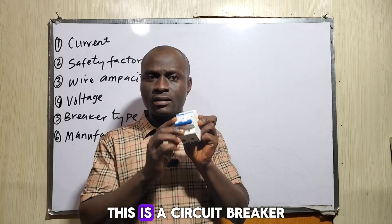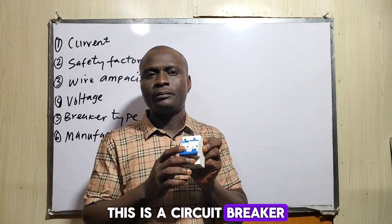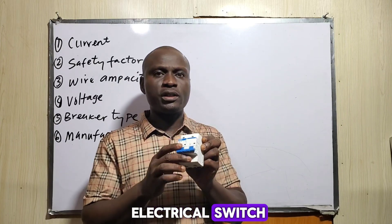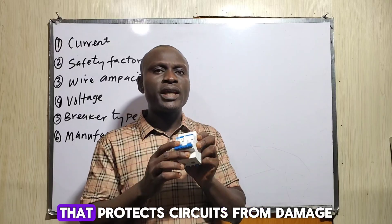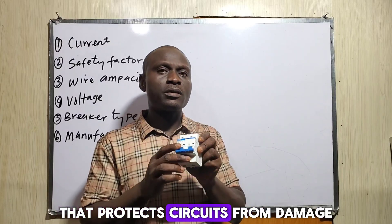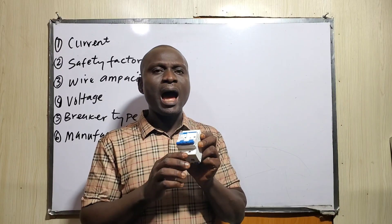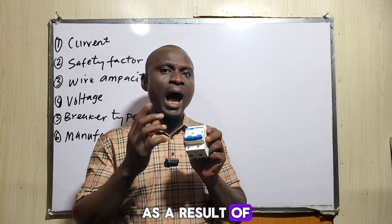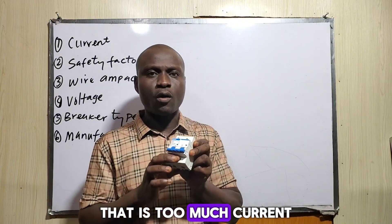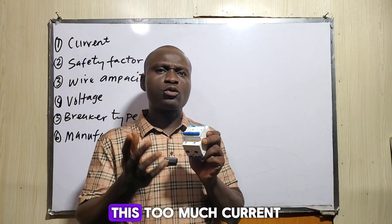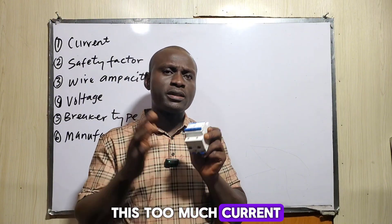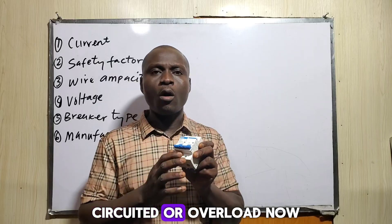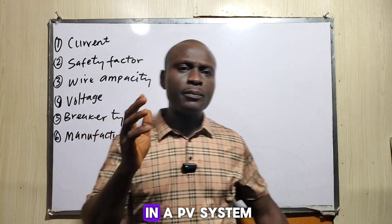This is a circuit breaker. It is an automatic electrical switch that protects circuits from damage as a result of high current — that is, too much current — caused by either short circuit or overload.